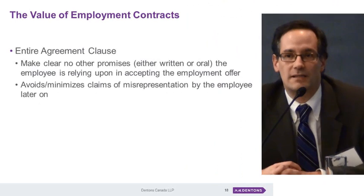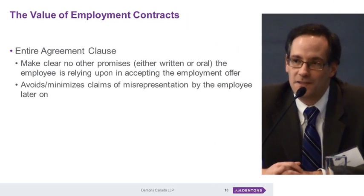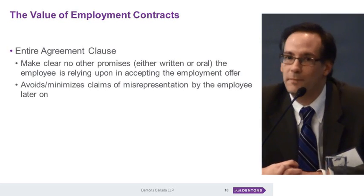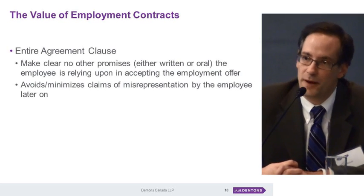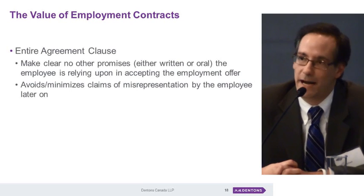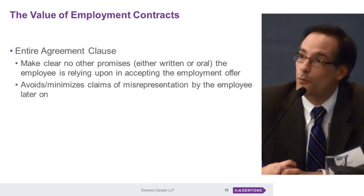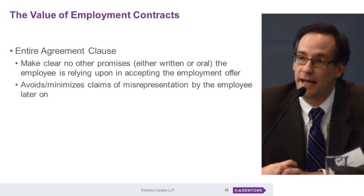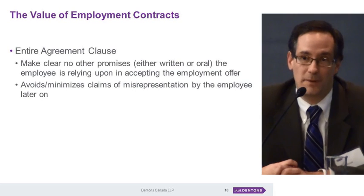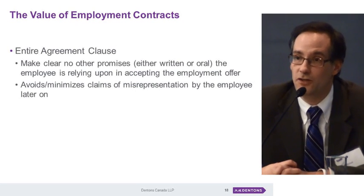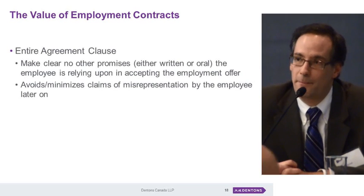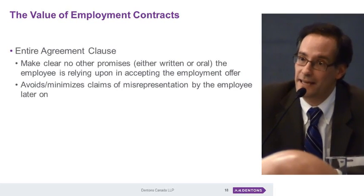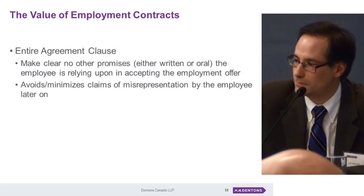The entire agreement clause is another important one. I've seen situations where an employer hires someone who seems like a great fit but turns out to be a disaster, and the person is fired within six or nine months. The employer relies on the termination clause, but the employee says when they signed the agreement they were told it would be a great job with all sorts of support and mentorship, and that none of that happened — essentially arguing that if those representations had been true they would have been great at the job, so the termination clause should not apply. An entire agreement clause addresses this by stating that other than what's in the agreement, no promises have been made — getting away from claims about things said during the recruitment phase.